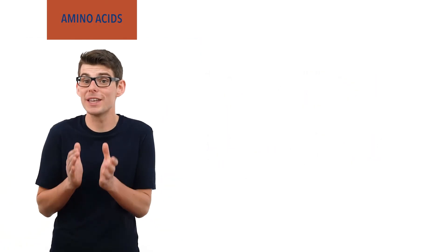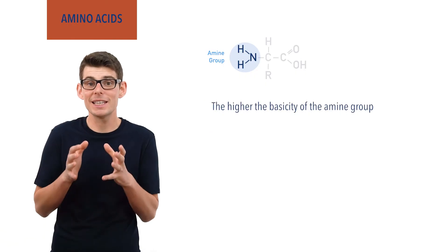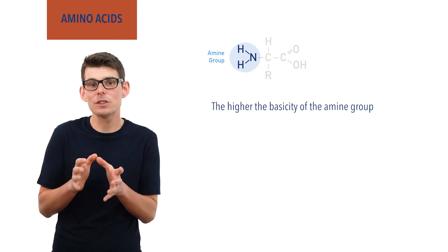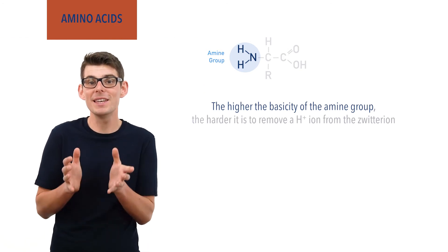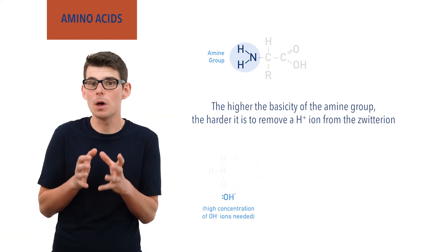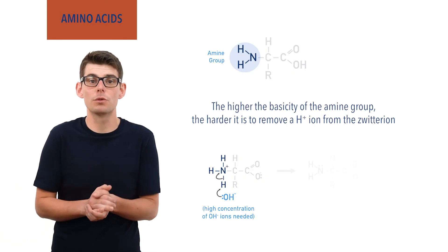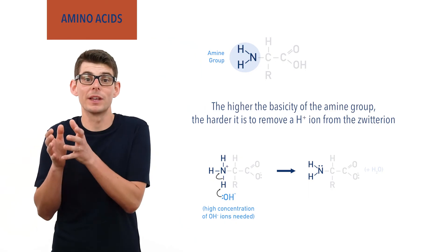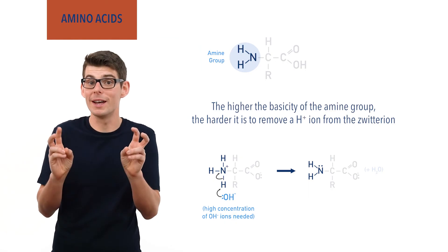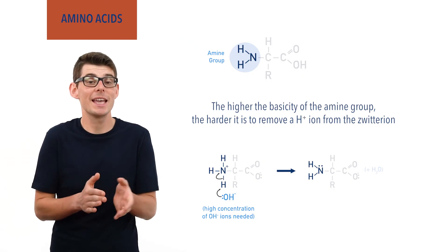It's the same story for the amine group. If the amine group has a high basicity, it easily accepts H+ ions — and if it does easily accept one, it isn't going to want to let it go either, meaning it takes a high concentration of OH- ions to force the ammonium group in a zwitterion to give up an H+ ion and reform the NH2 group, compared to an amine group with a low basicity. This is why different zwitterions will release H+ ions from the NH3+ groups at different pH values in alkaline solutions.